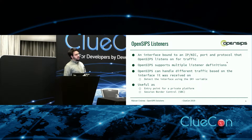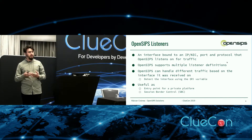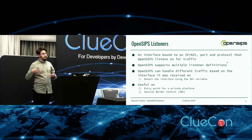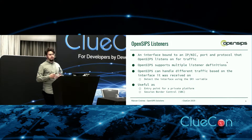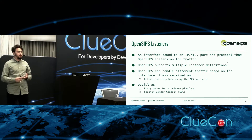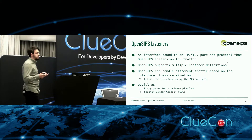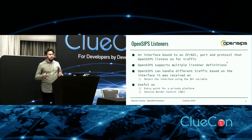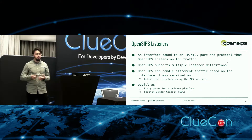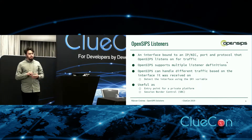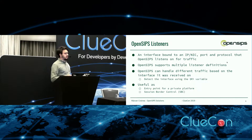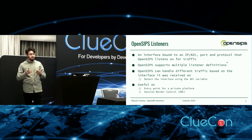A basic concept that comes with OpenSips is the OpenSips listener. Basically, a listener is a binding on an IP, port, and protocol. In OpenSips, you can have multiple listeners — for example, a listener on TLS, SCTP, UDP, or two listeners for two different ports. All you have to do is define a listener like: listener equals IP colon port. And that's how you configure OpenSips to listen.